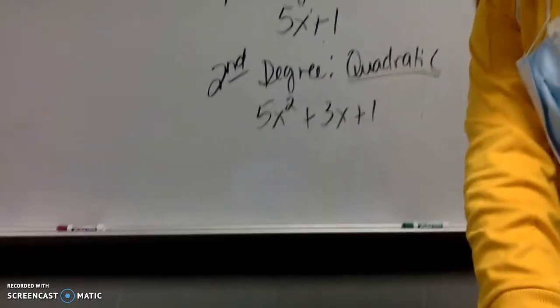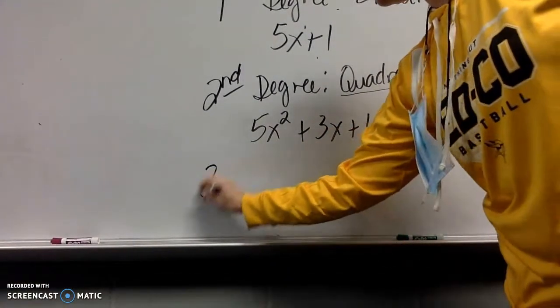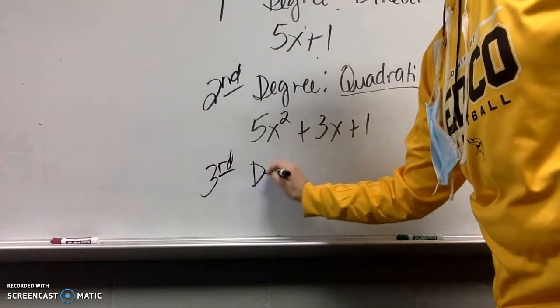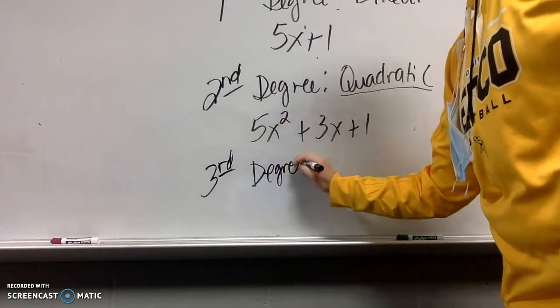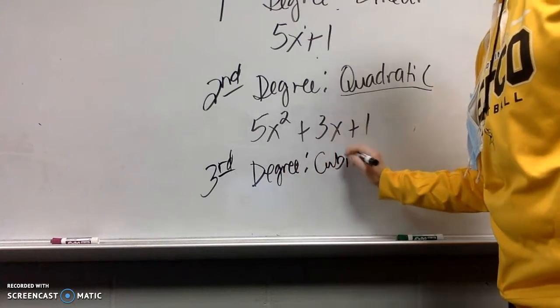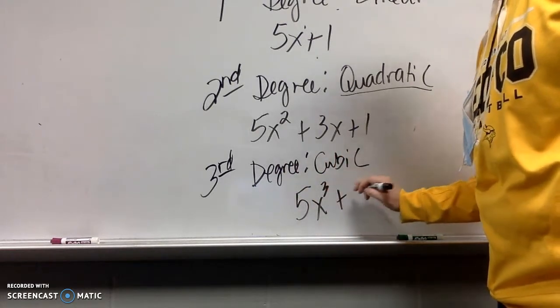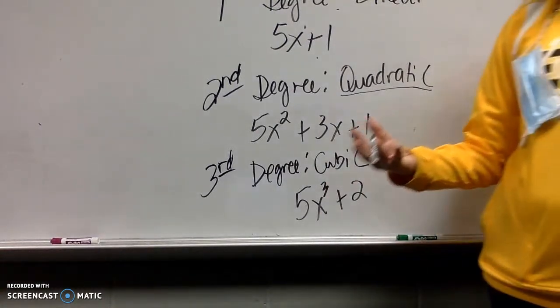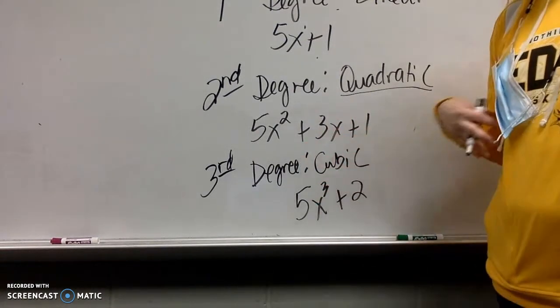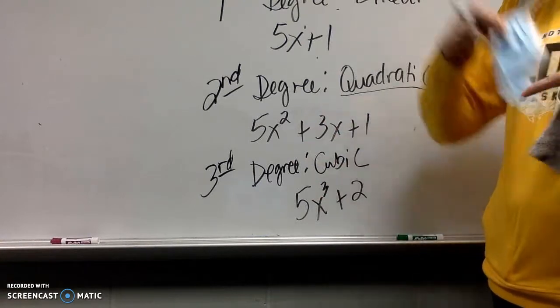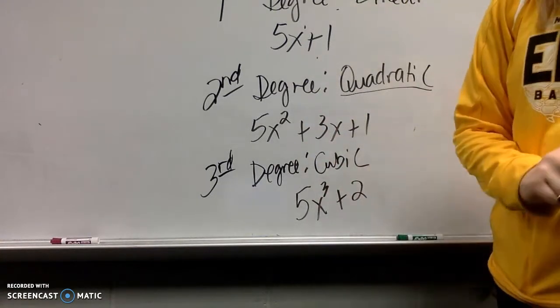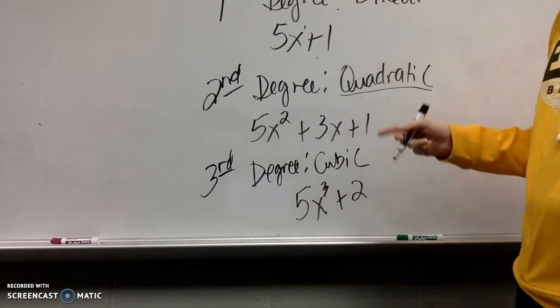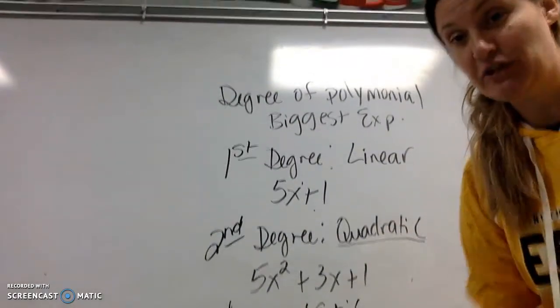And then finally, a third degree is called a cubic. And of course, third degree is when your biggest exponent is a 3. After that, there is no special name. After that, it would be 4th degree, 5th degree, 6th degree, 7th degree, so on and so forth. These are the only ones with special names that you'll have to know.